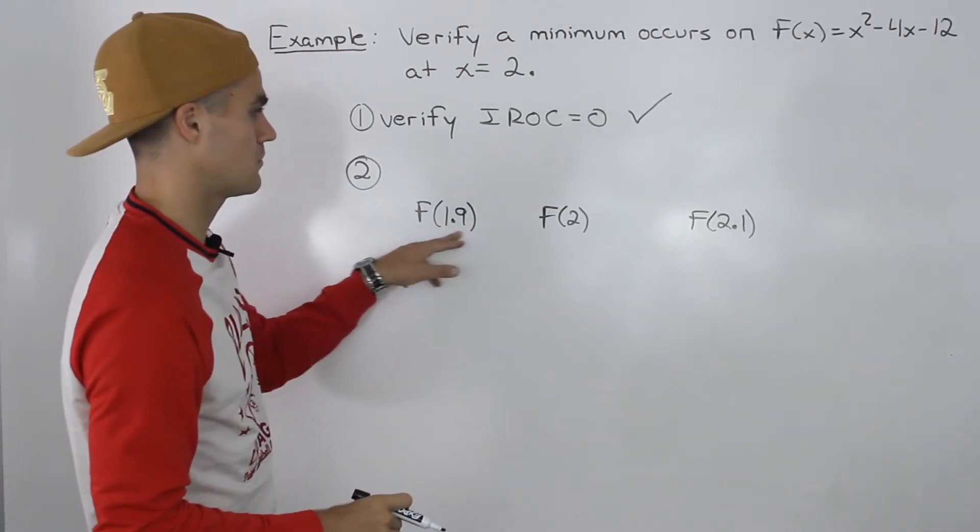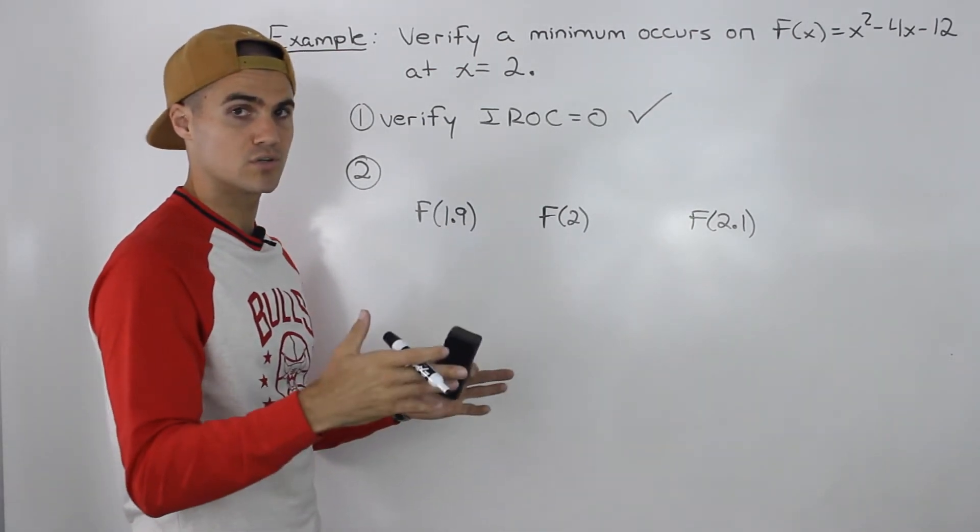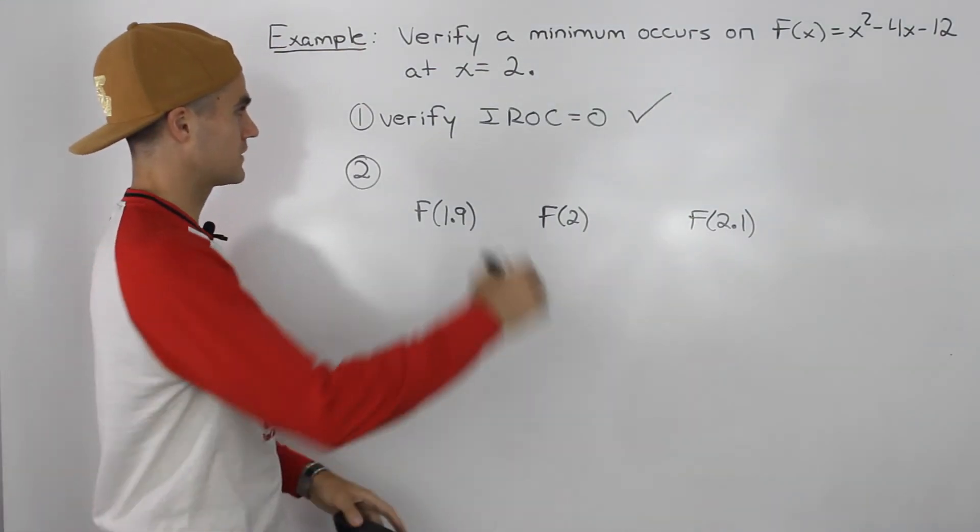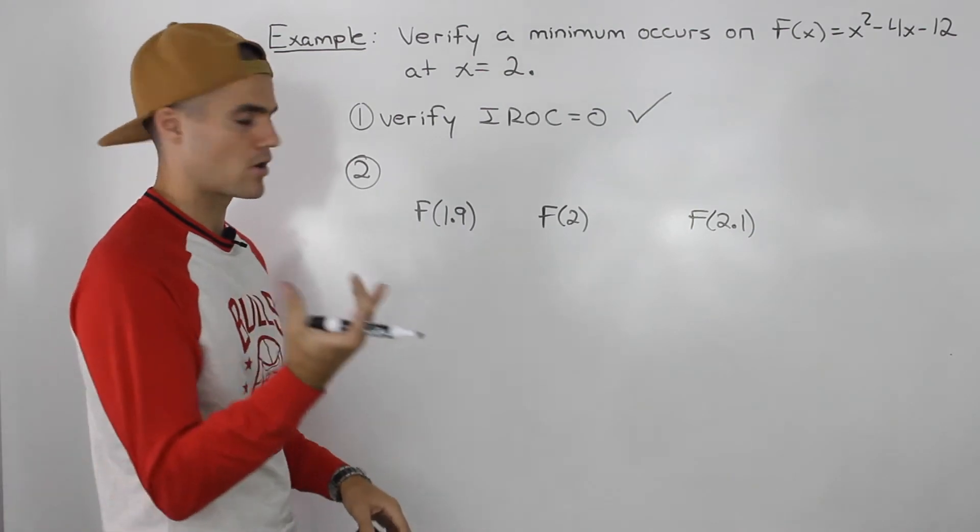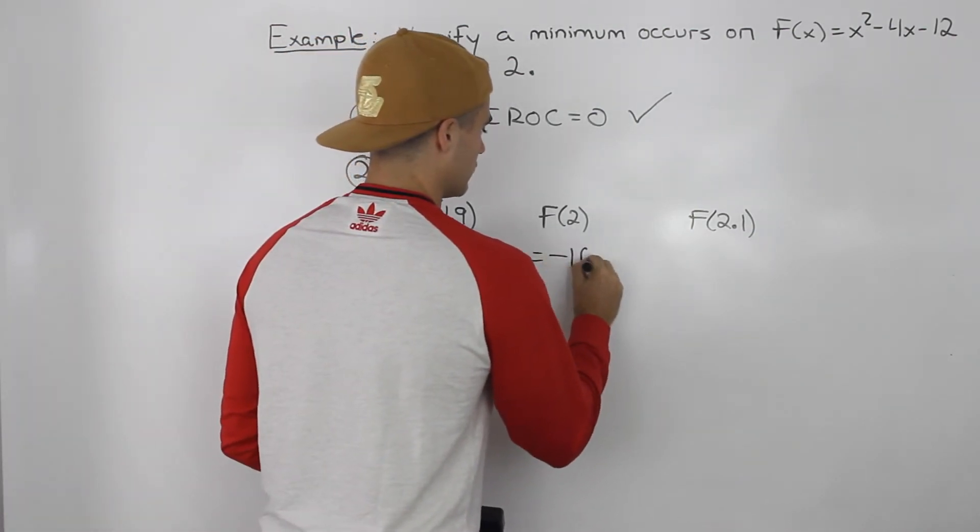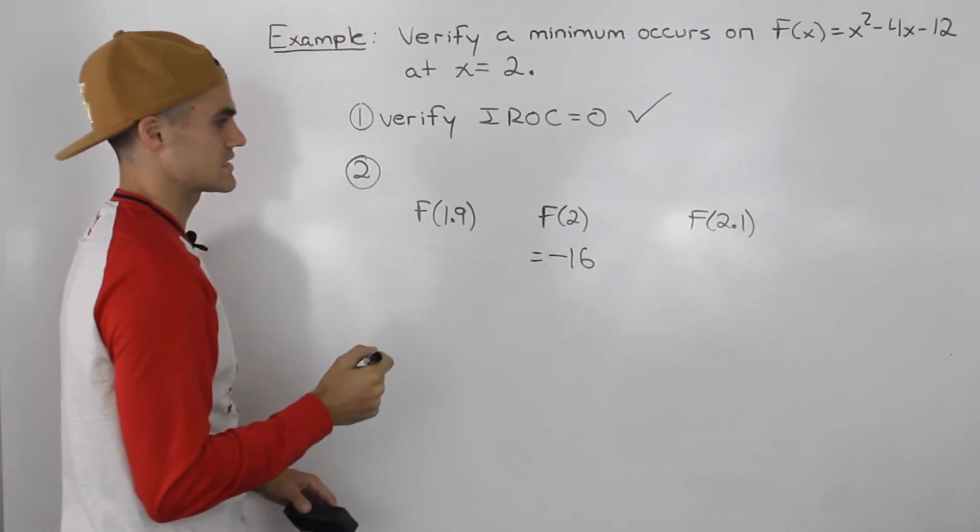I'm just going to use 1.9 and 2.1, but you can use points that are even closer to 2. And f(2), we already figured out what that was in step one. That was part of the difference quotient and we got a value of -16.